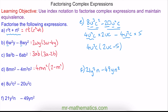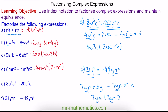For question F, we can see 7 is the common factor of 21 and 49, y is the common factor of y squared and y, and n is the common factor of n and n squared. So we multiply by 3 to make the 21, and y to make the y squared, minus the common factor multiplied by 7 to make 49 and n to make n squared. We have 7yn on the outside, with 3y minus 7n on the inside.